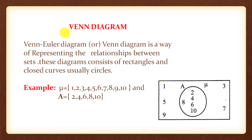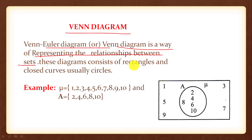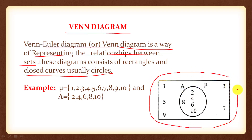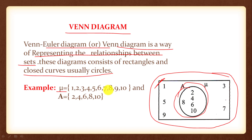Venn diagram: Euler diagrams or Venn diagrams are used for representing the relationship between sets. These diagrams consist of rectangles and closed curves, usually circles. For example, μ = {1, 2, 3, 4, 5, 6, 7, 8, 9, 10} and set A = {2, 4, 6, 8, 10}.